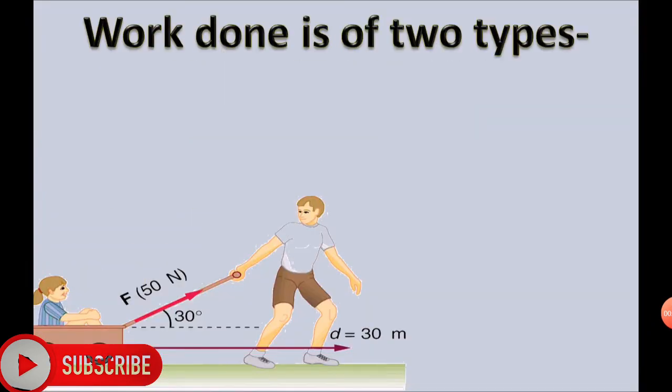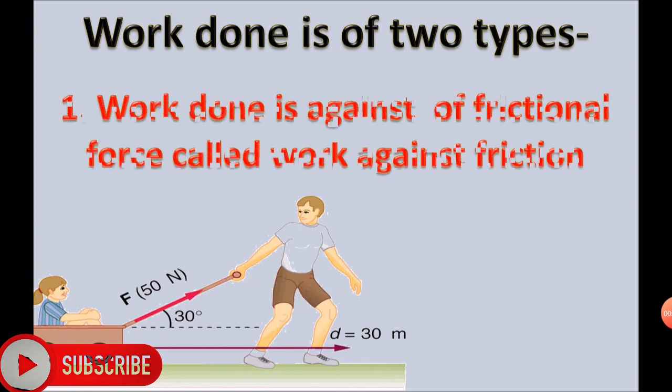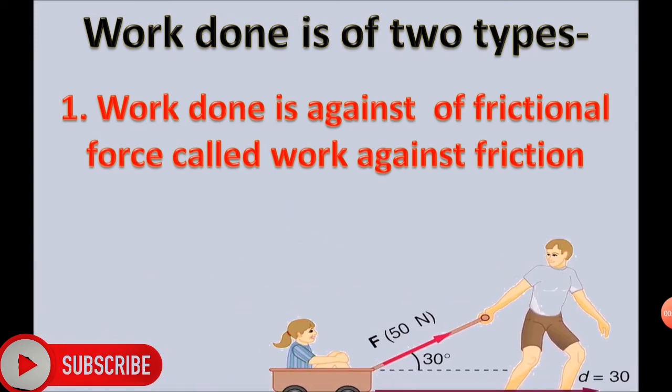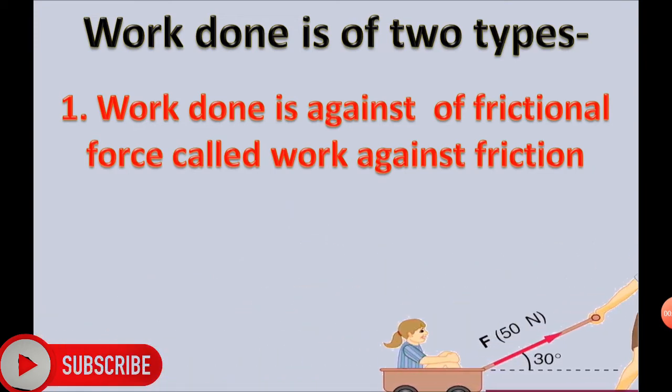Work done is of two types. The first type is work done against frictional force, called work against friction. While pushing or pulling an object, the work done is against friction, meaning displacement is produced against the force of friction.